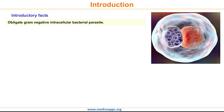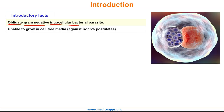Chlamydia is an obligate gram-negative intracellular bacterial parasite. This is probably the most important point to remember. Because it is an obligate intracellular parasite, it does not exist outside host cells and is unable to grow in cell-free media. This makes it unique — like viruses, Chlamydia is also against Koch's postulates.